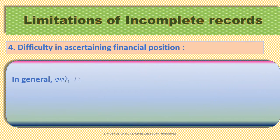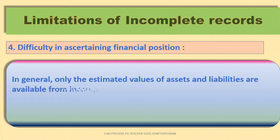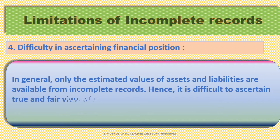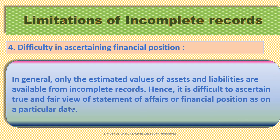Fourth limitation — Difficulty in Ascertaining Financial Position. Estimated values of assets and liabilities are available from incomplete records. Hence, it is difficult to obtain a true and fair view of the statement of affairs or financial position as on a particular date.